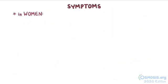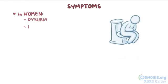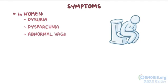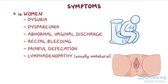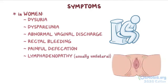In women, symptoms may also include dysuria, which is pain during urination, dyspareunia, which is pain during sexual intercourse, abnormal vaginal discharge, rectal bleeding, or painful defecation. In 50% of cases, there may be painful inguinal lymphadenopathy, usually unilateral, which may become suppurative.